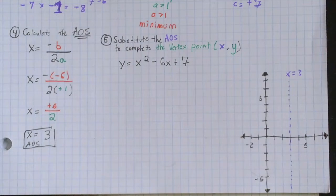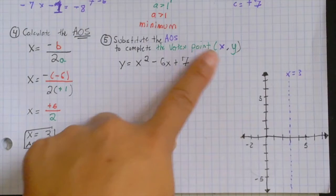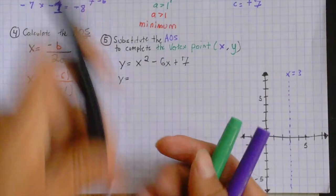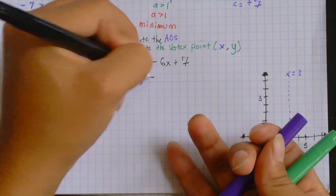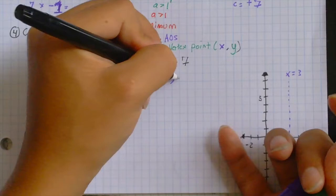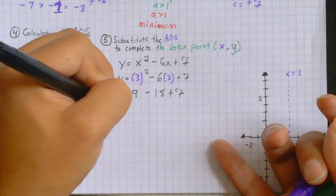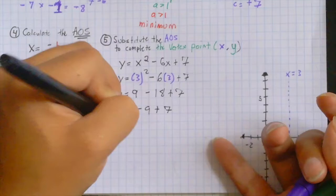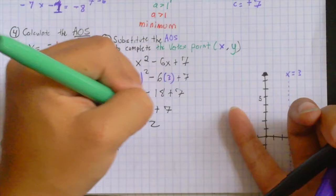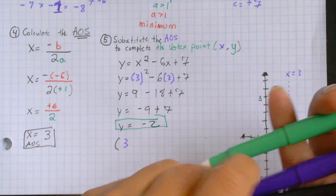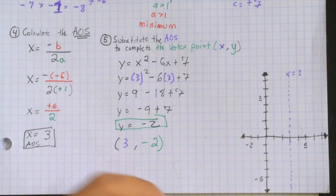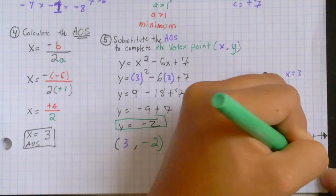We're going to substitute the axis of symmetry to complete the vertex point x, y. So, now we have y equals, instead of x squared, it is 3 squared. Minus 6 times 3 plus 7. And now, we just solve. 3 squared is 9. Negative 6 times 3 is negative 18. Added by 7. 9 minus 18 is negative 9 plus 7. y equals negative 2 therefore our point is going to be 3 comma negative 2 which on the graph is going to be right here and it is a minimum, the lowest point.